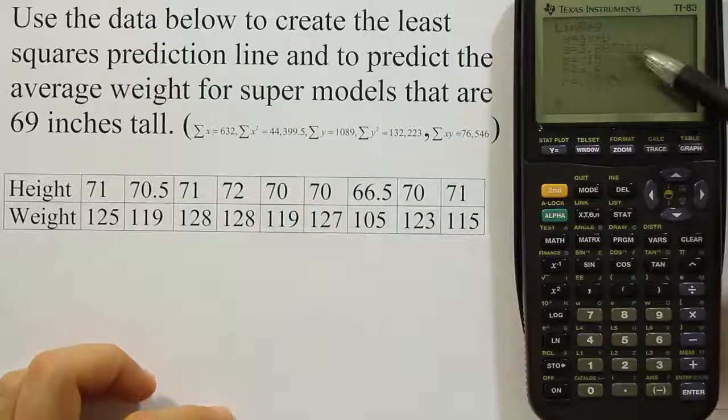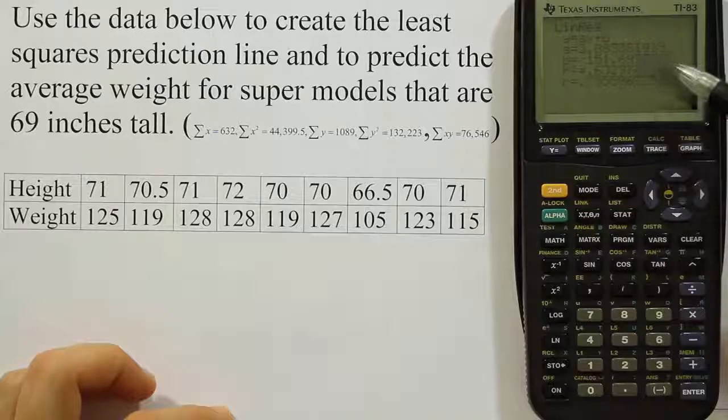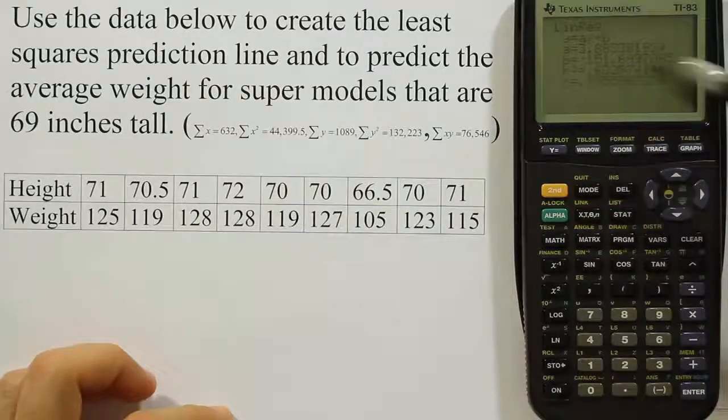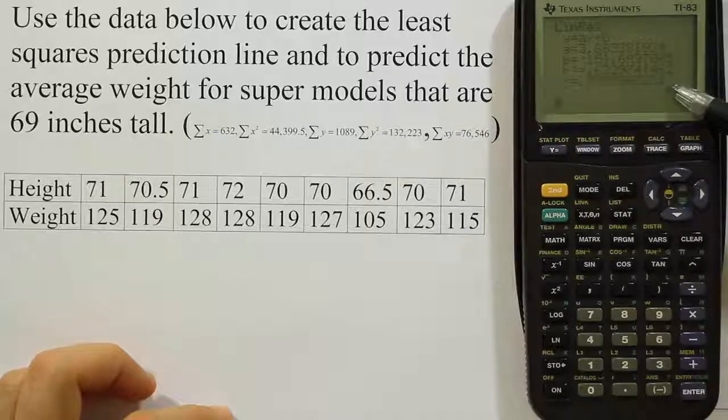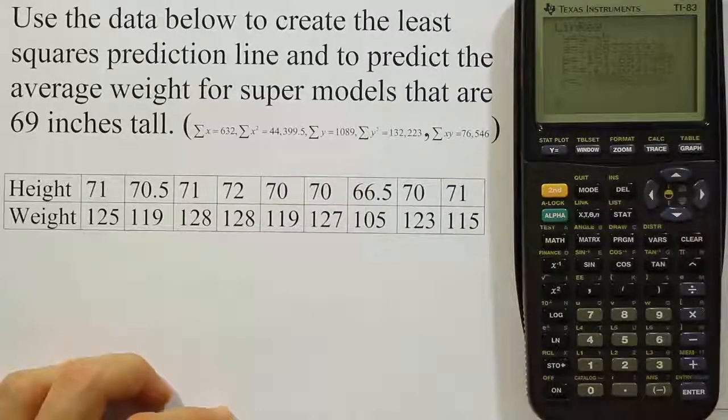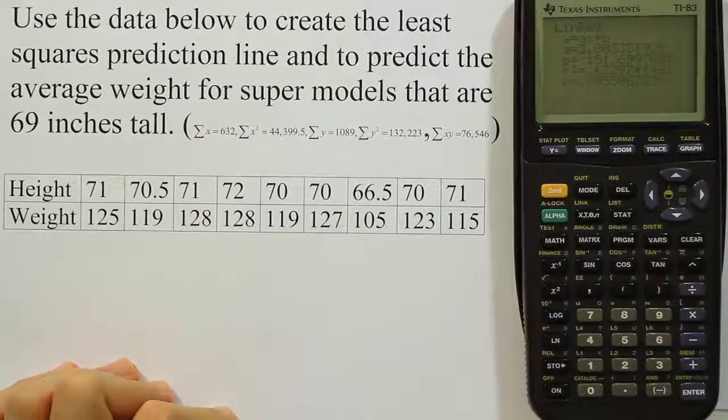Which is going to be negative 151.6997 or so. And then it tells me R squared and R. So I have the correlation coefficient R, and I have A and B, which is my slope and my y-intercept. And that finishes the problem. Now we have the regression equation.